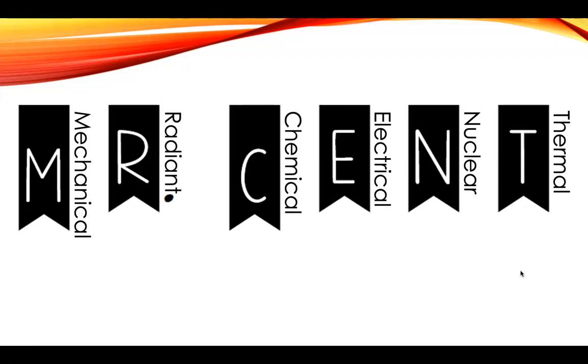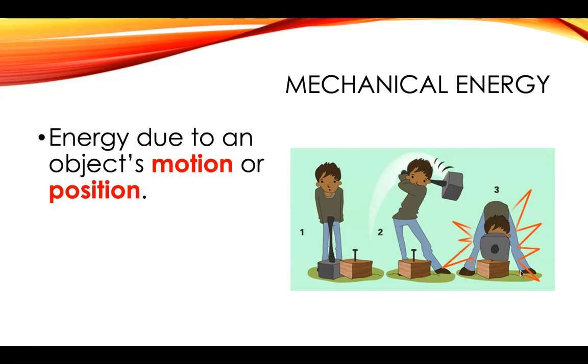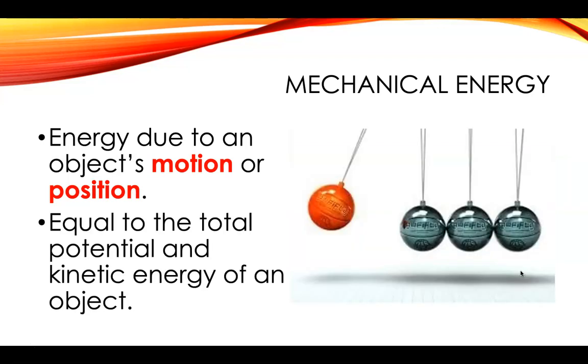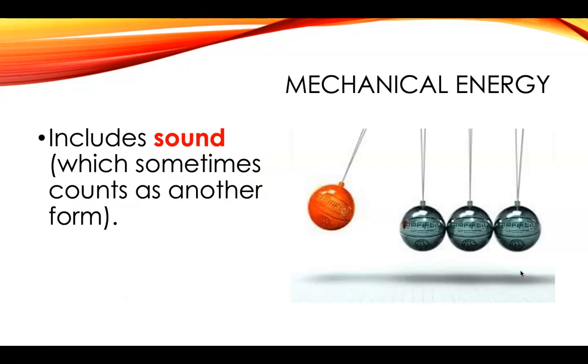We're going to get into the definitions and examples for each of those. Mechanical energy comes from an object's motion or position. It's equal to the total potential and kinetic energy of an object. So this is a combination of the stored energy and the energy of motion. Sound is included as a type of mechanical energy. Sometimes it's listed separately or specified as mechanical, and then in parentheses, sound.